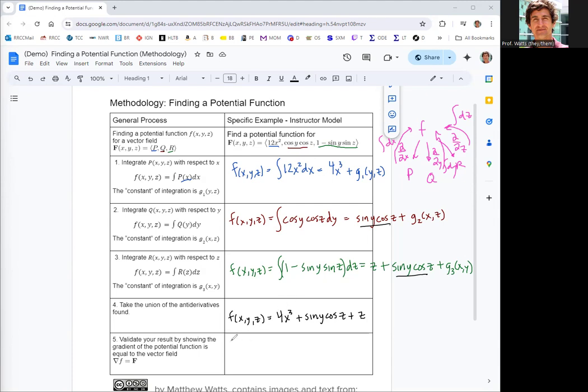All right. So let's do this validation. We're going to do the gradient of f, which is a vector where we do partial f partial x is the first component. Partial f partial y is the second component. And partial f partial z is the third component. So taking the partial derivative of f with respect to x, we're using the function in step four. Only that first term has an x. And so we would get 12x squared. Everything else is zero.